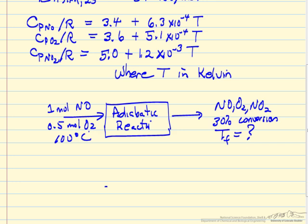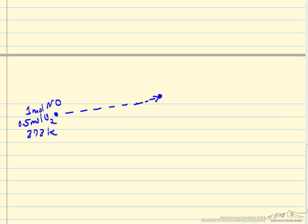We want to set up the approach we use to solve this type of problem. What I'm going to do is draw a representation to help visualize the solution. We have 1 mole of NO, 0.5 mole of O2 at 373 Kelvin, so I've converted to absolute temperature.